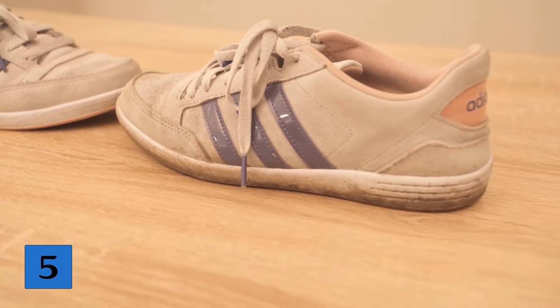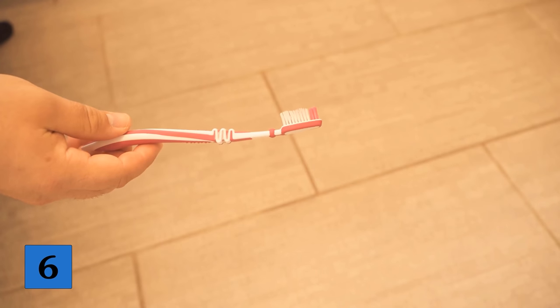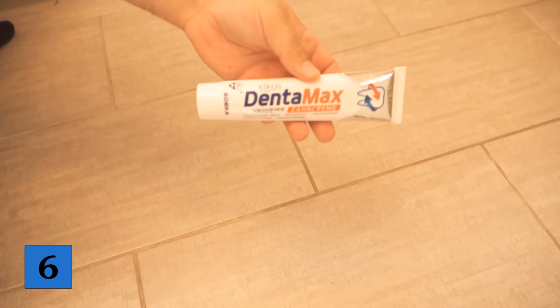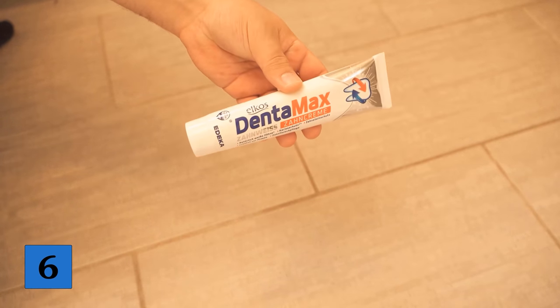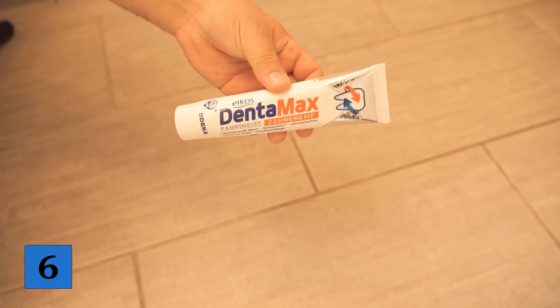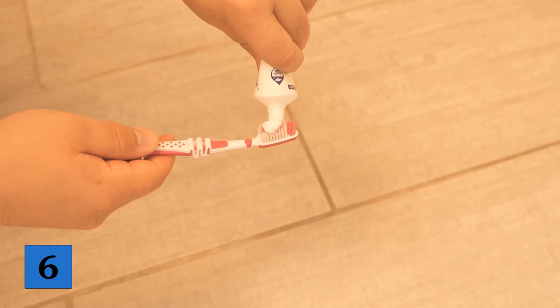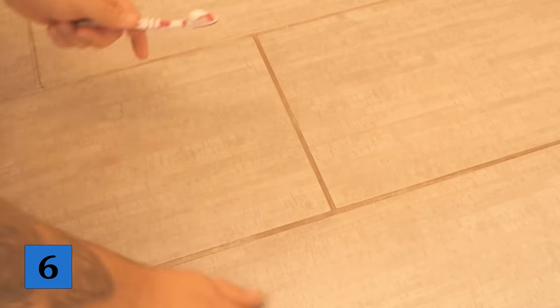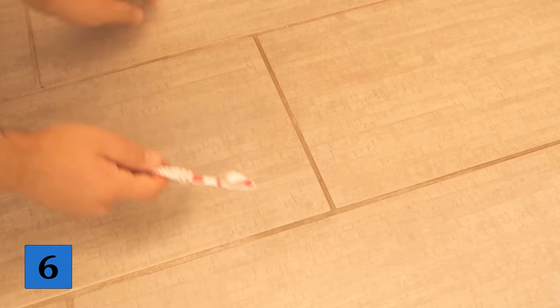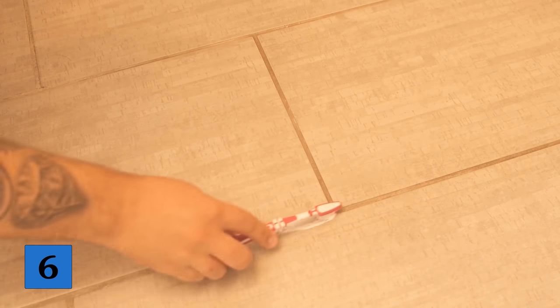And that brings us to cleaning trick number 6, where we tackle our grout lines. Because while we clean the tiles regularly, the grout joints usually don't quite get along with it, because here the floor cloth doesn't go through the grout joints. The tiles get clean, but the grout lines get dirtier and darker over time. But even here toothpaste can help us. For this we also take an old toothbrush again, put some toothpaste on it and make it still a little wet. And then we rub with it now through our joints.